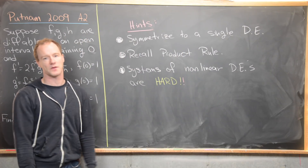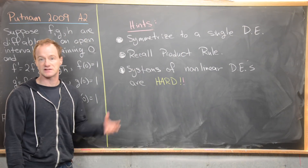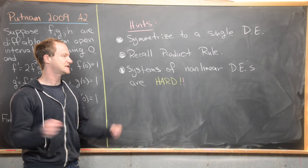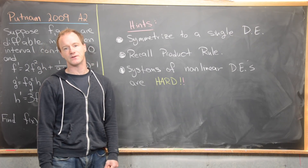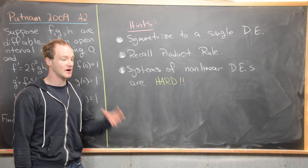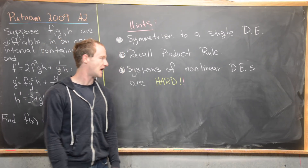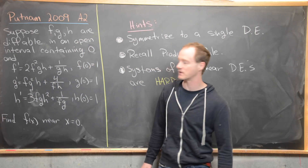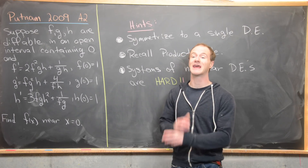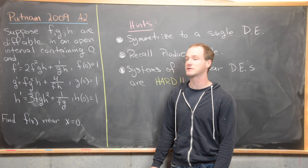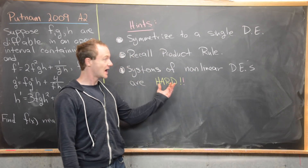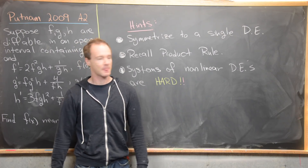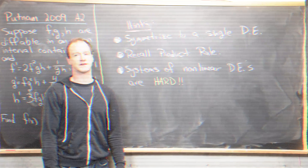The next hint is to recall the product rule — specifically the product rule for a product of three functions. Also recall that systems of nonlinear differential equations are very difficult to solve. Except for a few special cases, it's essentially impossible. Since we do have such a system here, we should expect a fairly simple solution, because examples with simple solutions are the only tractable ones.